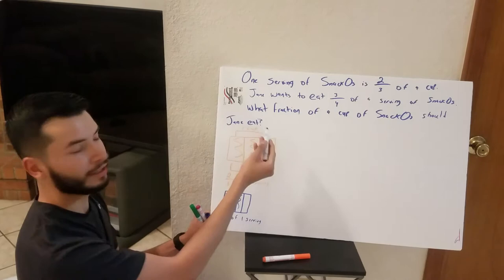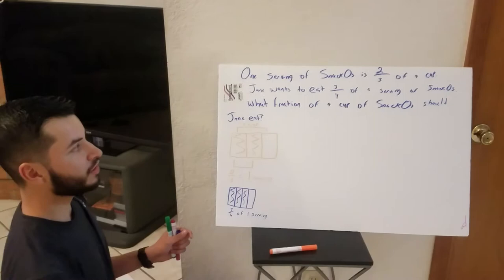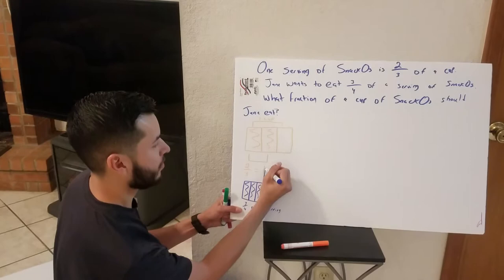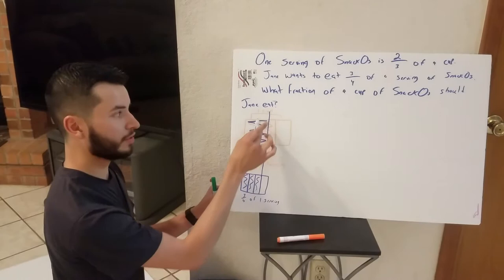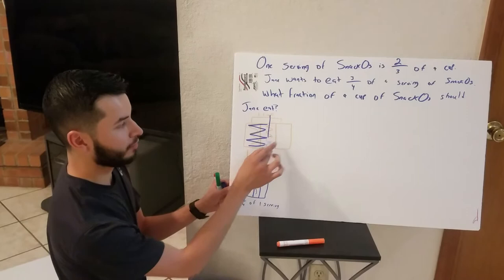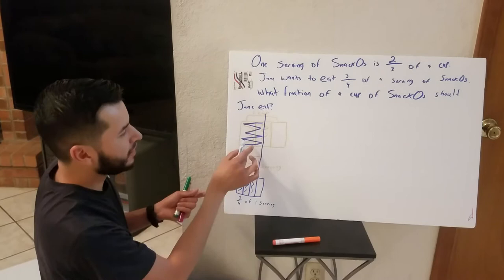Now let's get to the question. What fraction of a cup of snackos should Jane eat? So essentially what it's asking is what fraction is this of the cup. Our whole goes back to the cup — that's our new whole — so we want to find out what three-fourths of the serving is in relation to the full cup. We want to know what that double shaded region is, and we can't really tell just by looking at that, so we're going to go ahead and do common denominators.